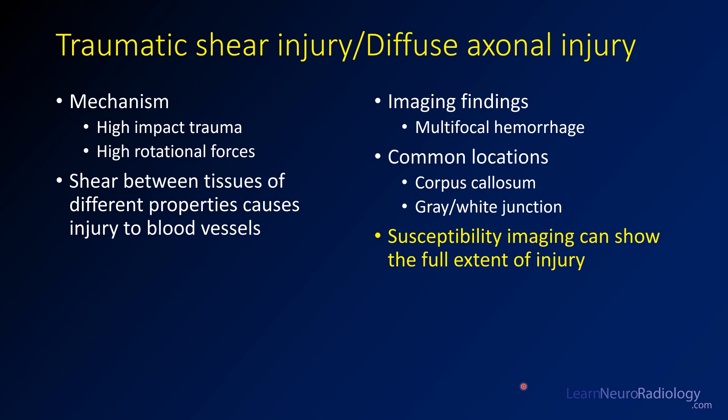Typically, the imaging findings you're going to see is multifocal hemorrhage, commonly in locations where there's different density or tissue properties between adjacent structures — commonly along the corpus callosum or at the gray-white junction. Susceptibility imaging is really the best to show the full extent of the injury, while those other modalities are used to show other things.